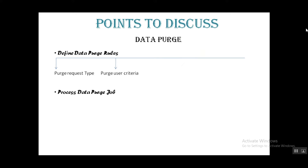The third sub-step is criteria to exclude users. If, as per your data purge rule, some set of users should not be purged, you can set that exclusion criteria in the system so those users are excluded when the rule picks up users for purging. The last sub-step is setting approval in the data purge rules, so the data purge job will wait for that approval before proceeding — either approved or rejected.